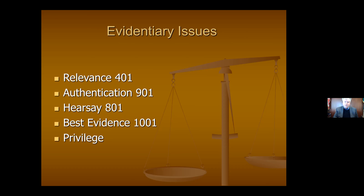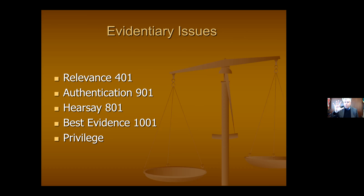The fifth issue we call privilege, but it also includes things like the parol evidence rule — which bars offering external evidence on a contract — as well as dead man statutes and similar doctrines. You don't see it very often, but you kind of know it when you see it. Generally we'll be dealing with those four top issues: relevance, which drives the train and determines how you authenticate; authentication, showing the thing is what you purport it to be; hearsay, whether you're offering to prove the truth and whether an exception applies; and the best evidence rule.